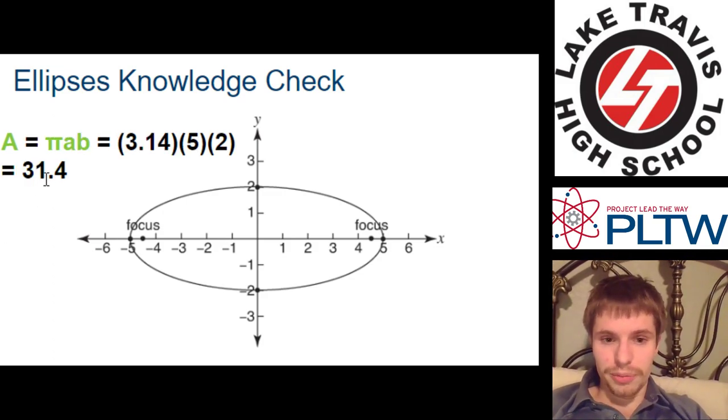Easy. Plug it into the formula. Pi times a times b. Pi. 3.14 times 5 times 2. 31.4.